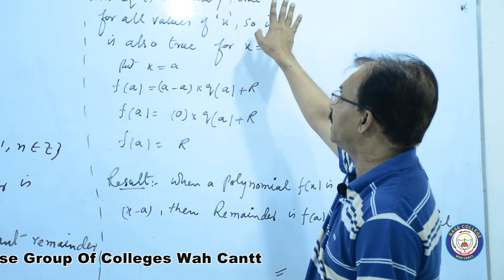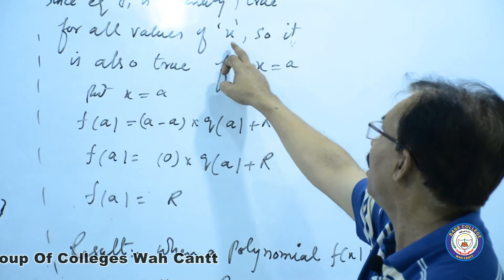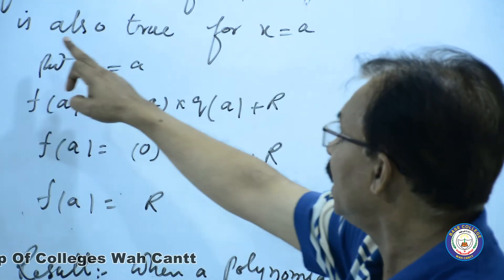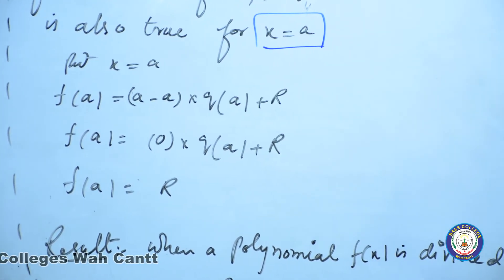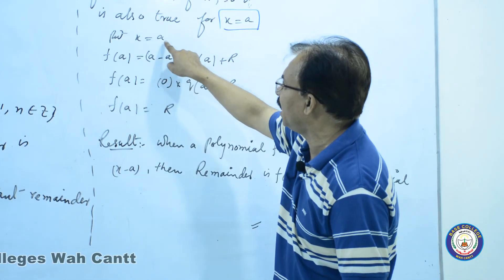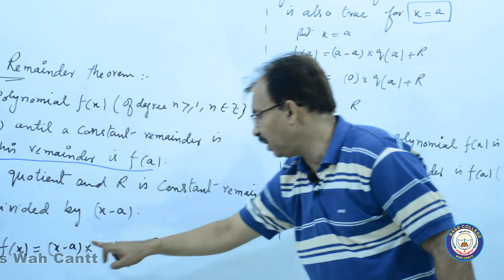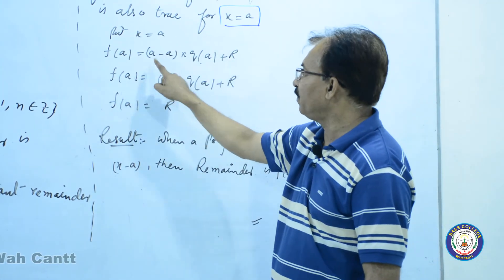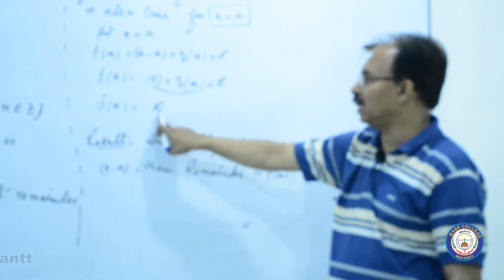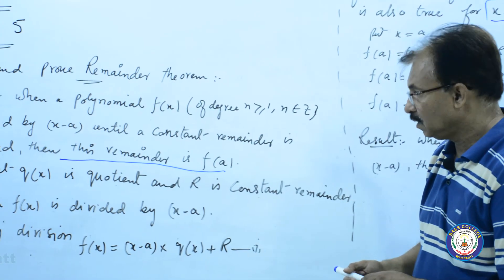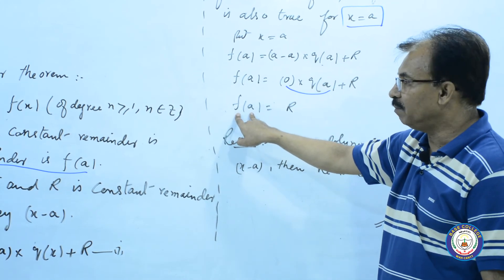یہ equation ایک identity ہے۔ identity وہ چیزیں ہیں جو پہلے سے proved اور true ہیں، for all values of x۔ x کی ہر value کے لیے یہ prove ہوتی ہے، تو یہ x equal to a کے لیے بھی true ہوگی۔ جب x کی جگہ a put کریں: f(a) = (a - a) × q(a) + r۔ a minus a = zero، zero into anything zero ہو گیا۔ تو f(a) = r۔ یہی ہمیں proof کرنا تھا کہ remainder is f(a)۔